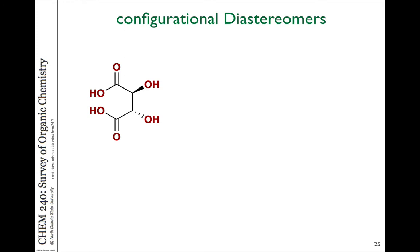Another type of diastereomer is a configurational diastereomer. This can occur when you have more than one stereogenic carbon in the molecule. These are stereoisomers related not as mirror images but still different — comparing molecules where one of the configurations is the same and the other has changed. If at least one is the same and others have changed, you don't have a mirror image.